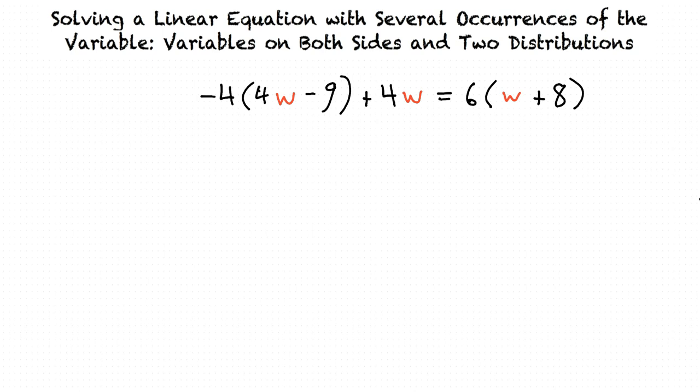The first thing we want to do is distribute the negative 4 into 4w minus 9, like so. And we want to distribute the 6 into w plus 8. And performing these multiplications results in negative 16w plus 36 plus 4w equals 6w plus 48.